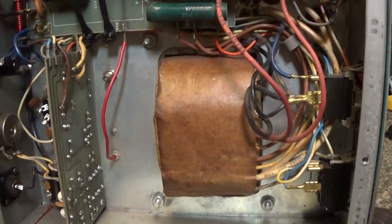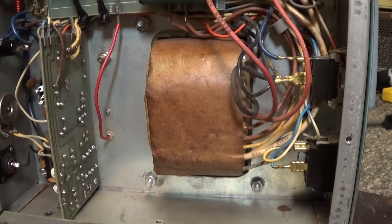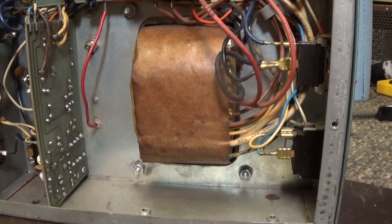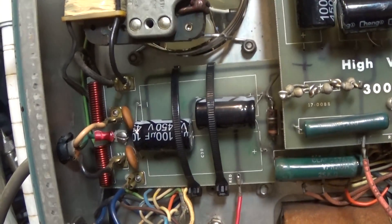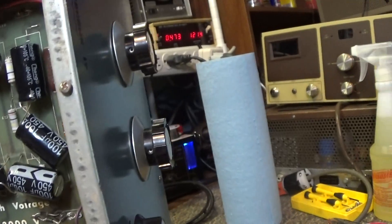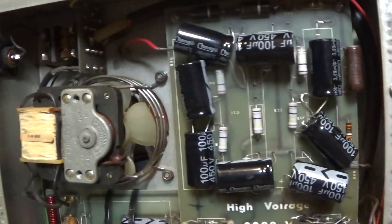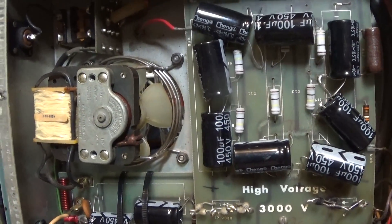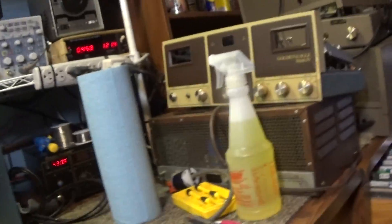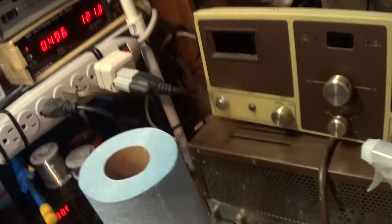Got a decent sized transformer for two 572Bs in it. A little board there is the power supply for the driver, and that's the high voltage power supply. Cooling fan mounted vertically, interesting. And the tubes are mounted horizontally.